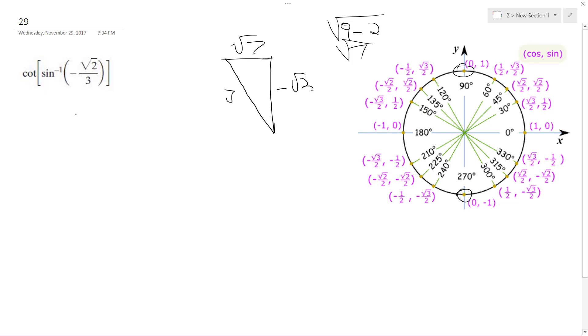Okay, so we just want the cotangent. So the cotangent is equal to x over y.